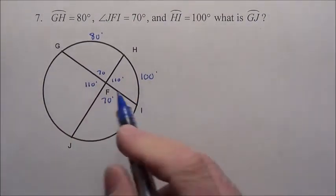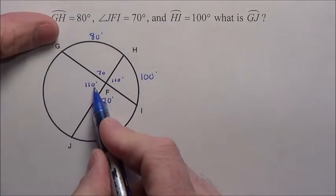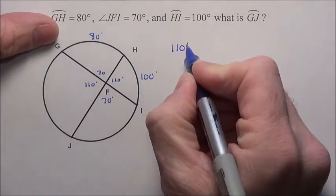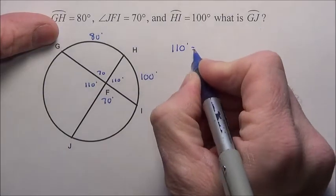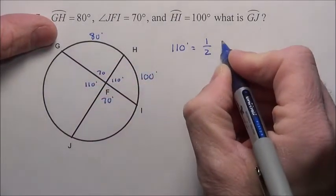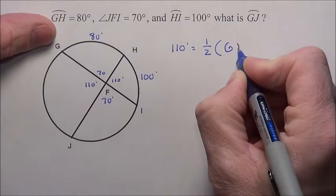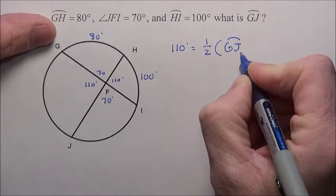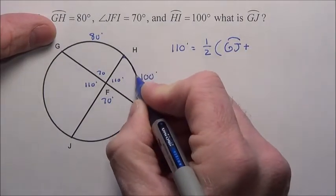So I know this right here, this 110, the way they got 110 is it was half of this arc of GJ, which I'm searching for, plus this arc HI.